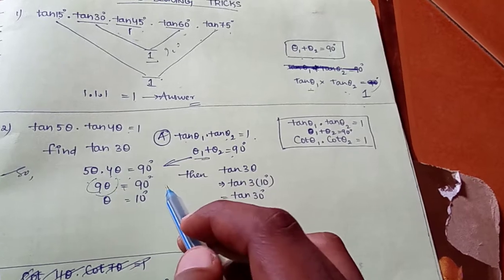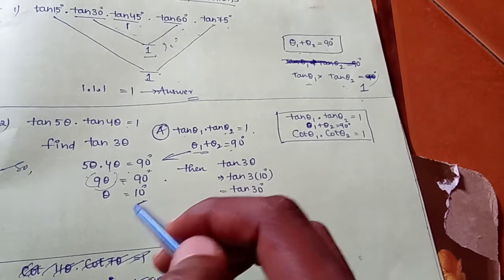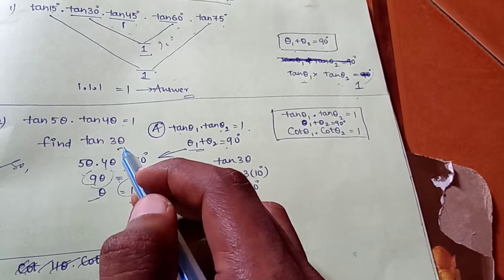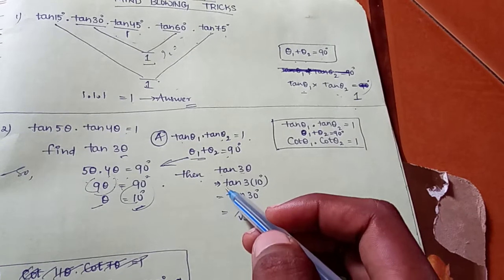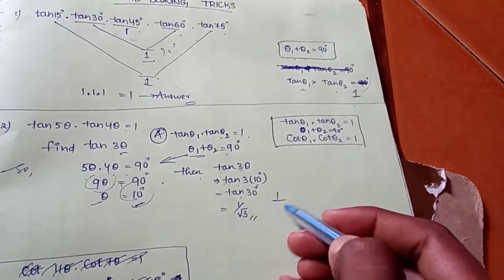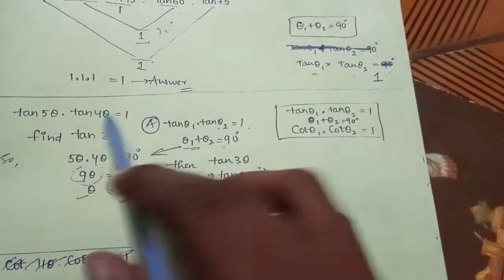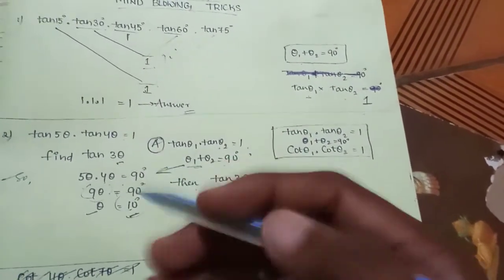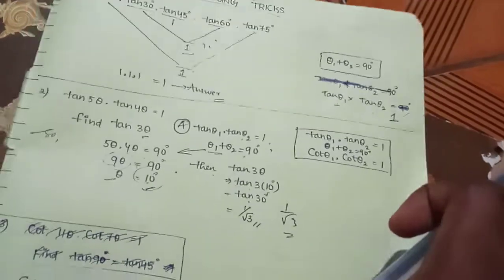So θ = 90 / 9 = 10 degrees. Now find Tan 3θ = Tan(3 × 10) = Tan 30 = 1/√3. So the value is simplified to 1/√3.